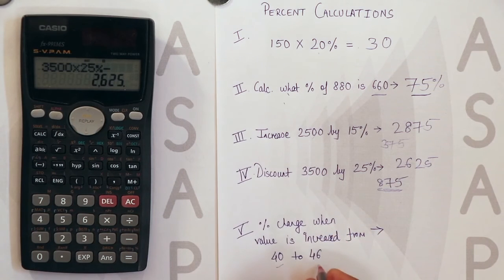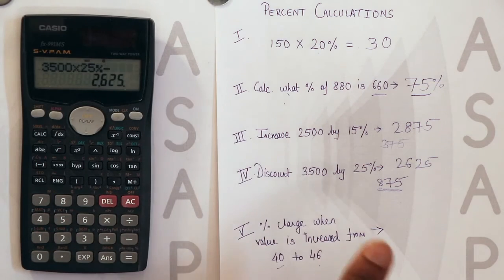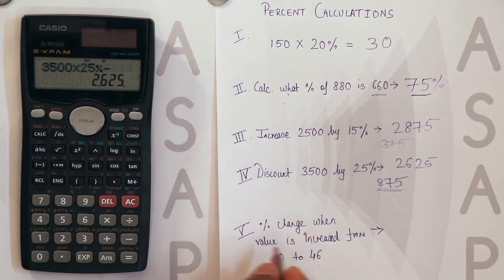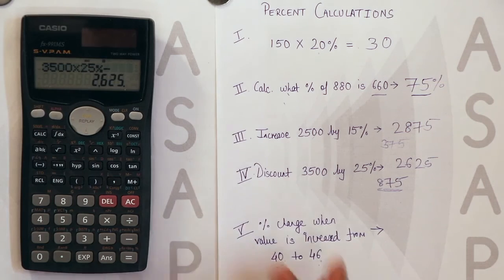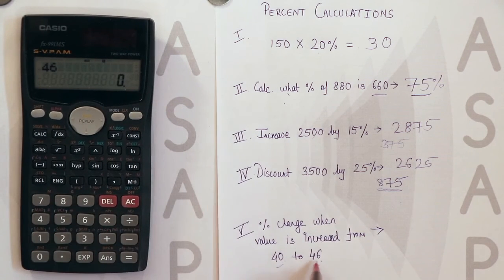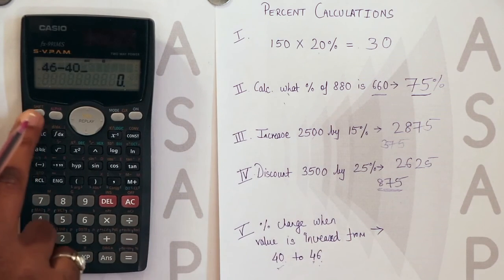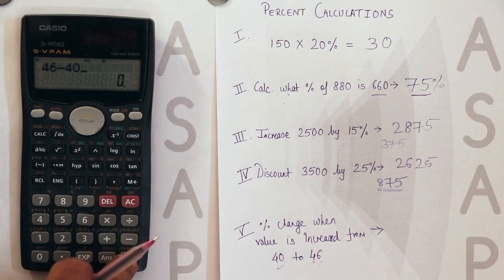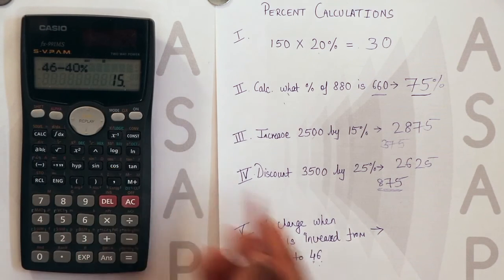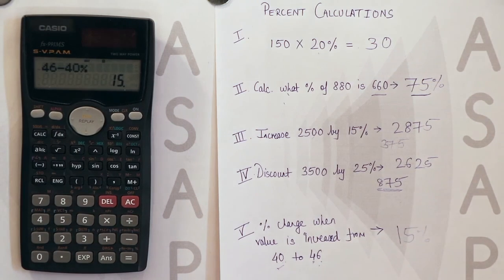For example, from 50 to 55, what is the percentage increase? Here we have taken 40 to 46. What you need to do is: 46, the increased value, minus the original value that is 40, shift and the percentage sign. You get the answer, that is 15%. So the percentage change in value is 15%.